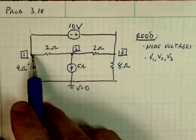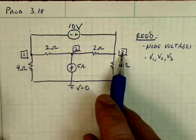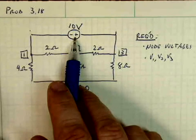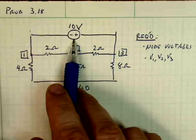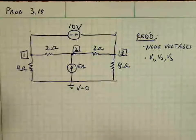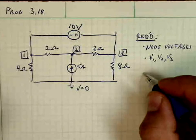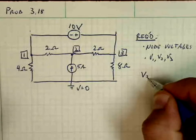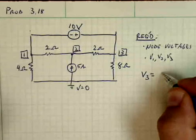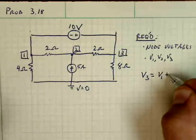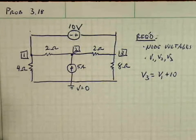V1 and V3 are connected by a 10-volt source in between them, and V3 is at the higher voltage. So one equation that we have is V3 is equal to V1 plus 10. So they're linked together.